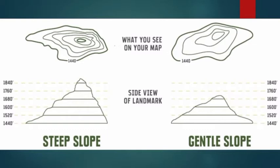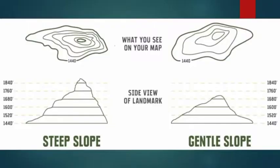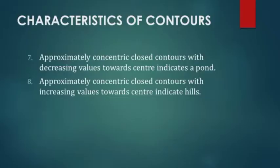Characteristics 3 to 6 can be considered together: widely spaced contours indicate a flat surface; closely spaced indicates steep slope; equally spaced indicates a uniform slope; and irregularly spaced indicates an uneven area. This is a derivative of the second point — the same concept extended.